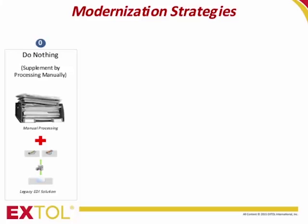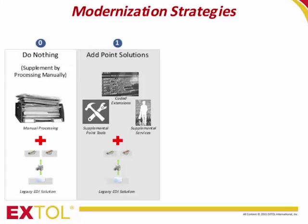The first real modernization strategy is to add point solutions as needed to meet new requirements. Examples include coding extensions to your primary middleware solution, using point tools or services for isolated requirements. The real benefit of this strategy is that it imposes low initial costs, but the disadvantages of point solutions generally outweigh those cost benefits. Some of those disadvantages are lack of integration with other EDI systems, multiple contacts for support purposes, siloed visibility, and additional overhead for multiple lifecycle processes, skill sets, and maintenance cycles. Ultimately, the long-term costs of the point solution strategy are higher than the other options.